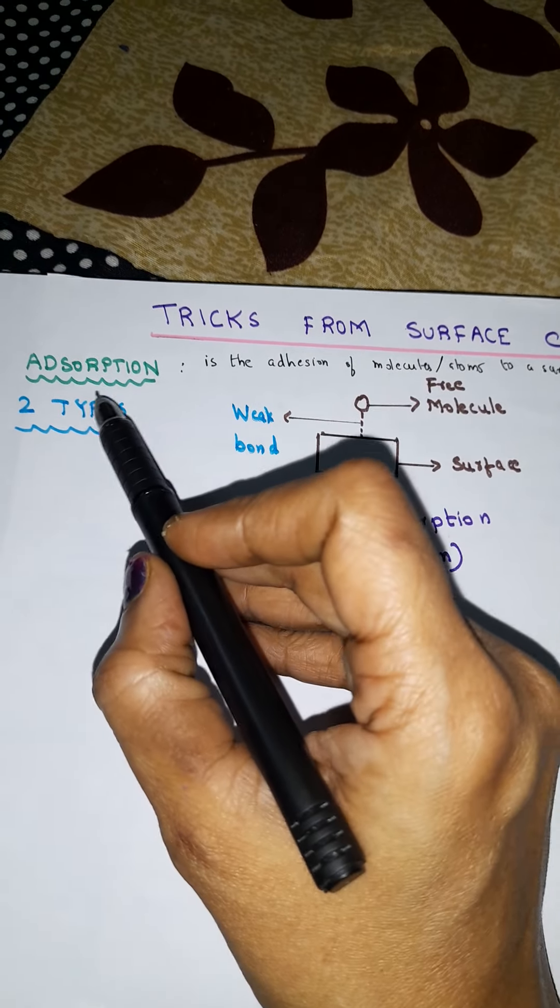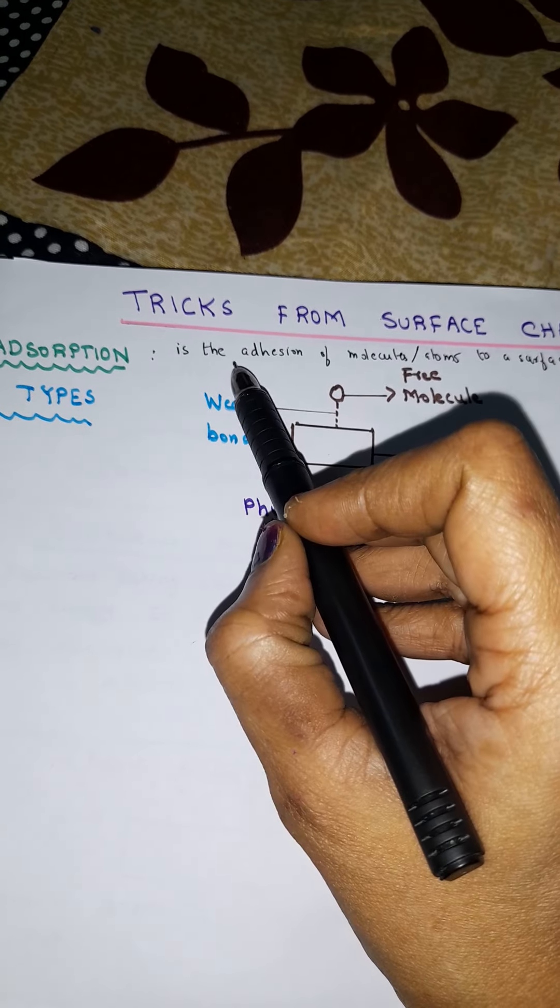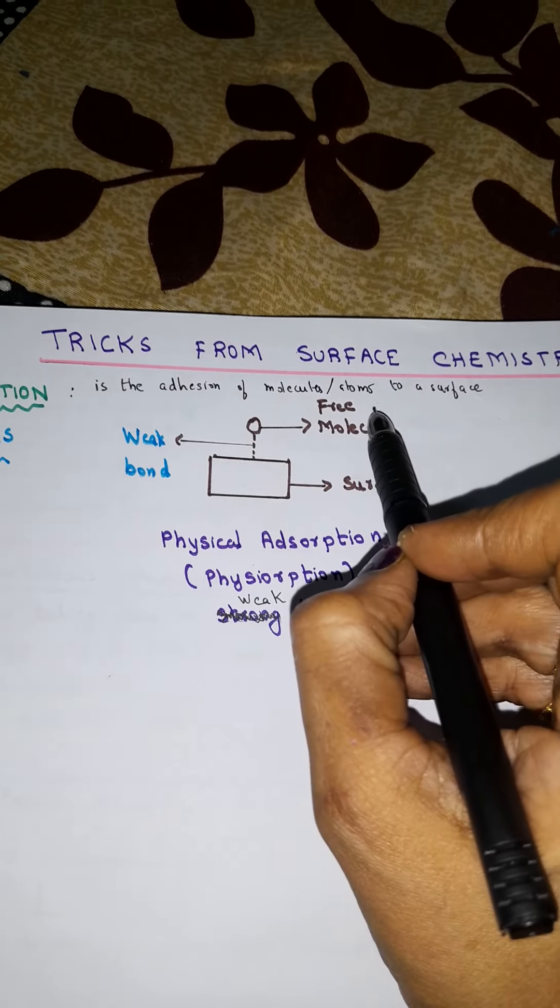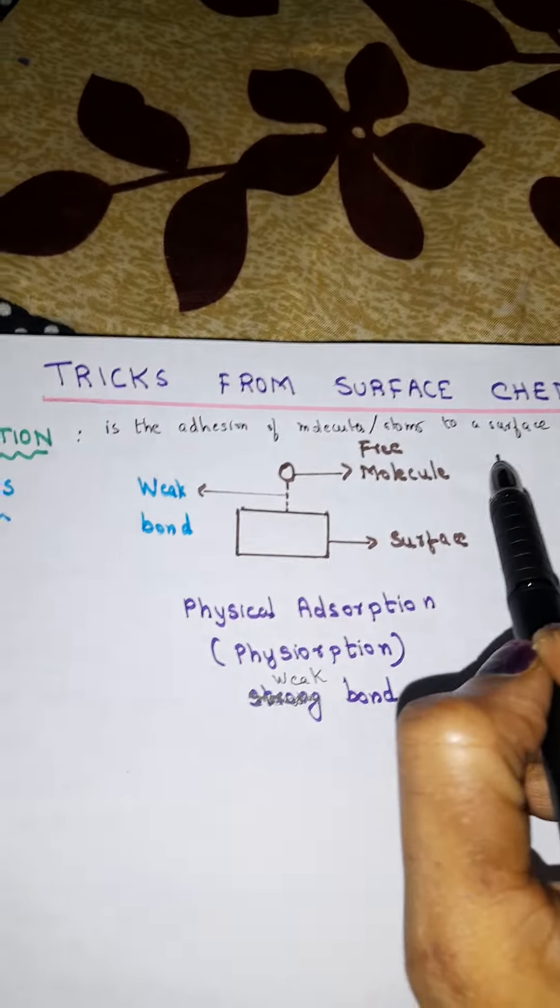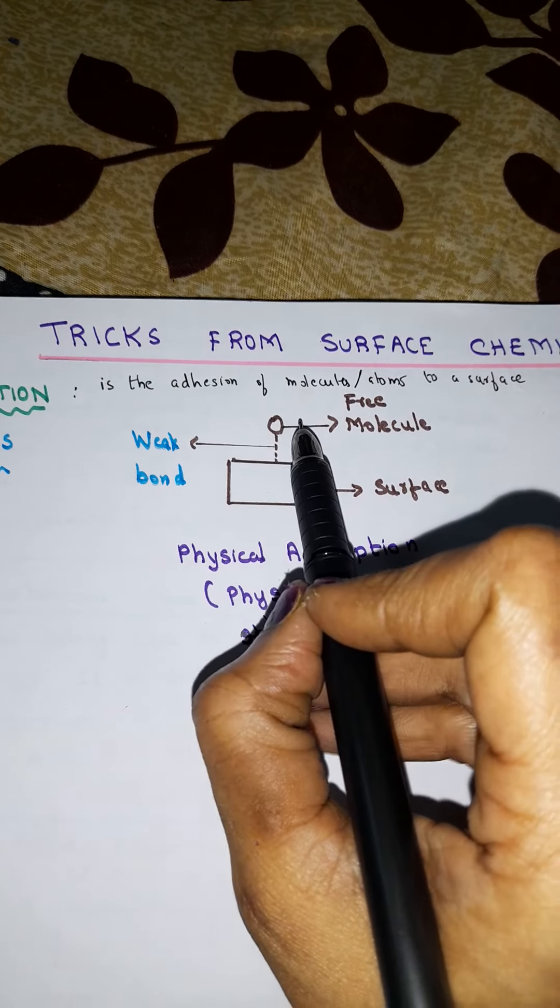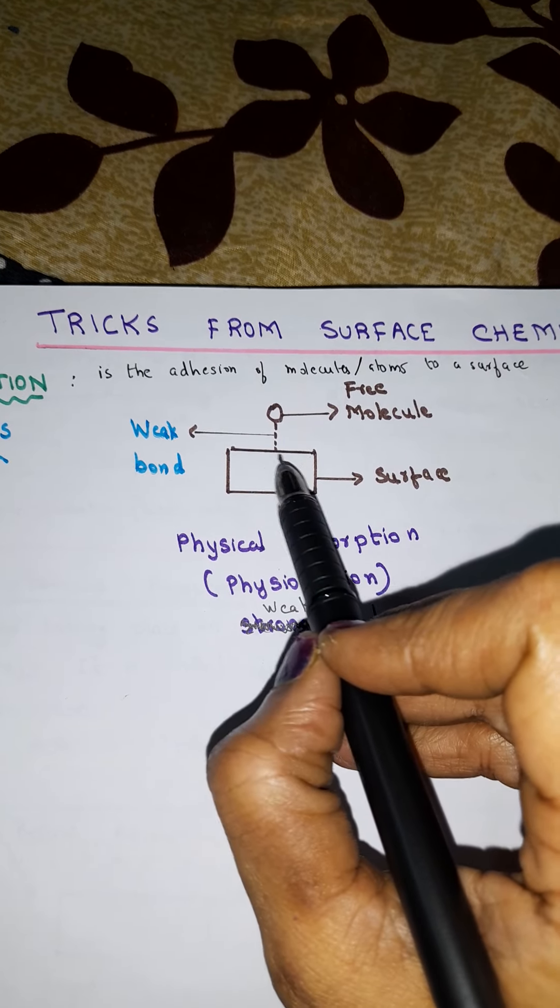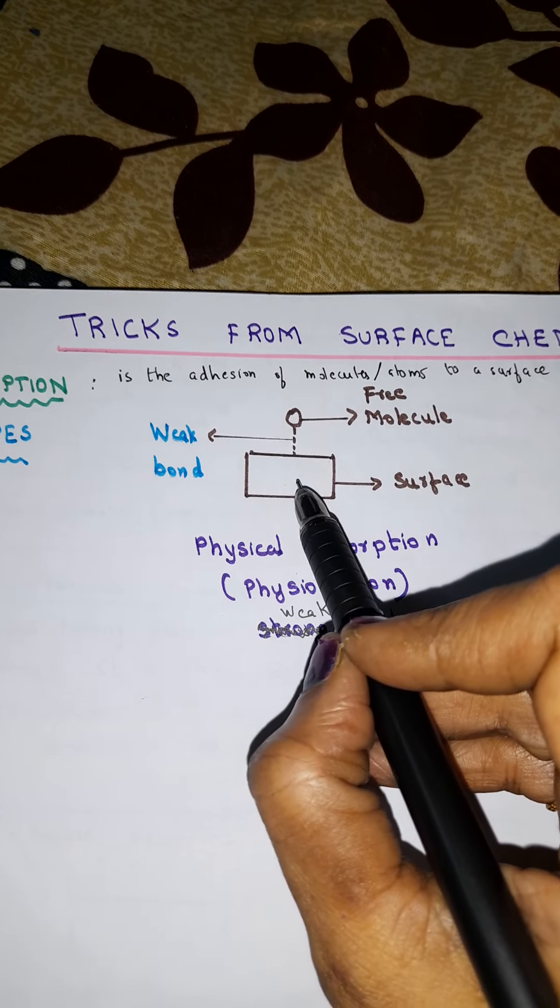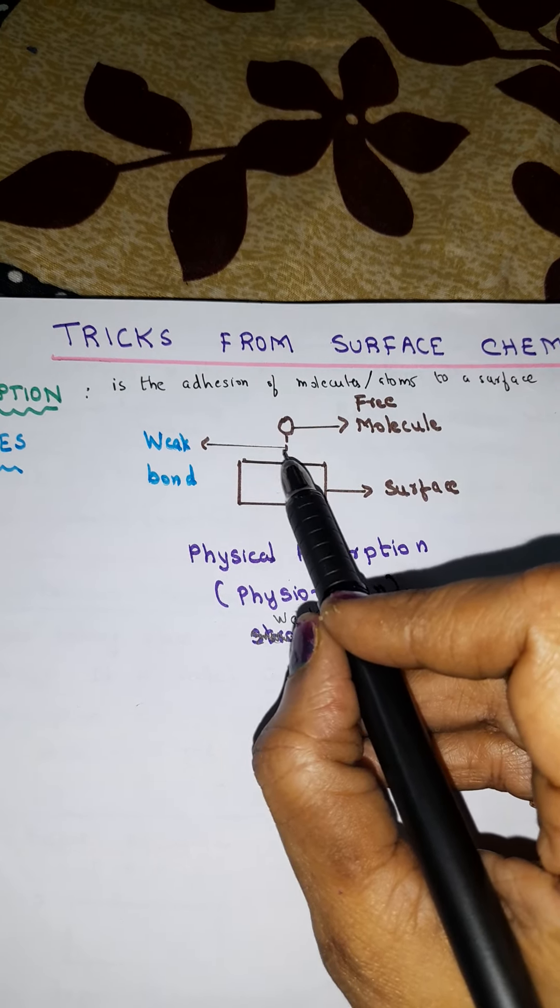So now we will see what is adsorption. You all know adsorption is the adhesion or sticking of molecules or atoms to a surface. Now you can see here a free molecule if it is approaching a surface. I have shown this with a simple diagram so that it will be very easy for all of you to understand.